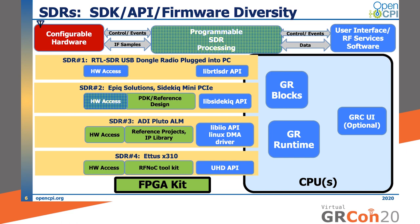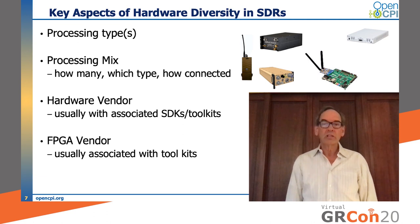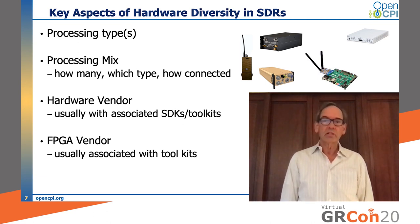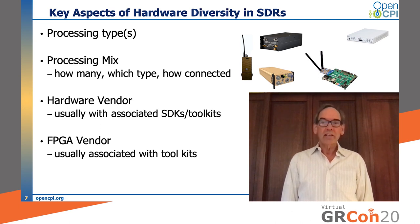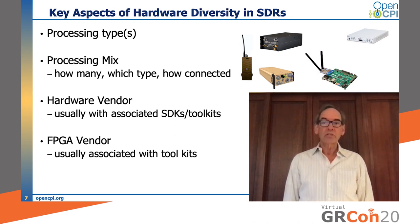Our final example radio is the ETTUS X310 with the big FPGA. ETTUS has their API called UHD, which provides source and sink blocks for GNU Radio. ETTUS also provides a serious FPGA toolkit called RFNoC, which constructs processing configurations for the FPGA. The radio front end hardware is accessed entirely from the FPGA. So the summary is that we have four vendors, four APIs, and three FPGA toolkits — there is a lot of diversity in SDRs: different types of processing, different mixes of processing, different ways of connecting processors, different hardware vendors with different APIs, SDKs and toolkits. Even the various FPGA simulation tools are different.